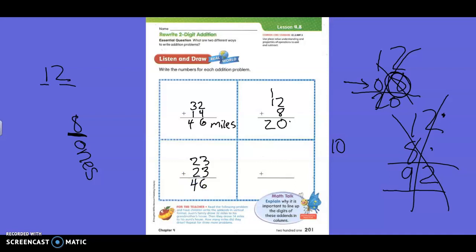Last problem. Miss Morgan drove 45 miles to the Space Museum. Then she drove 49 miles to visit her sister. How many miles did she drive? So, what's my first number? Everyone? 45. What's my second number, everyone? 49.